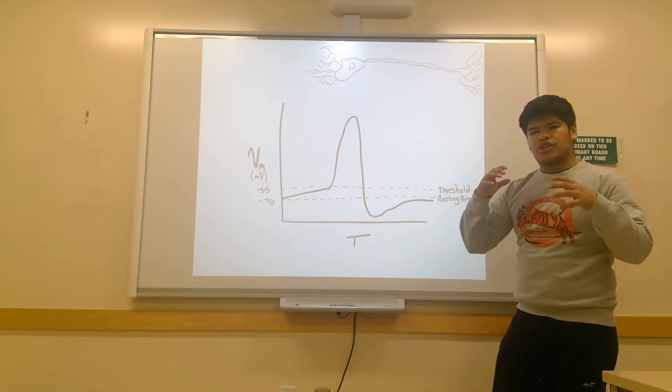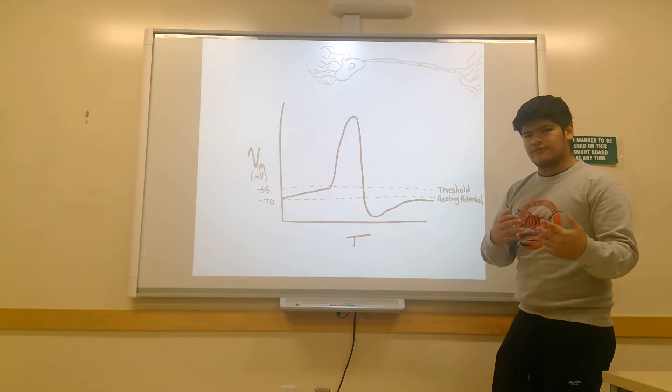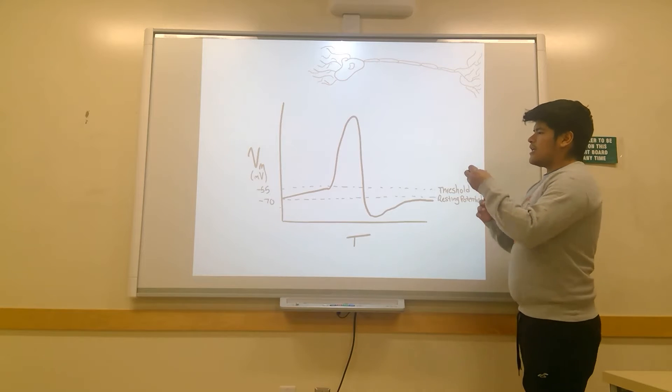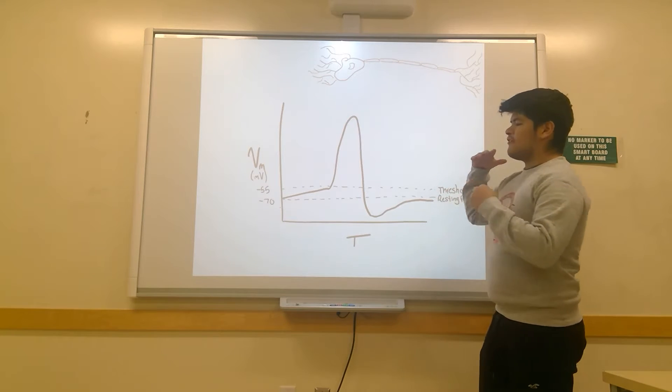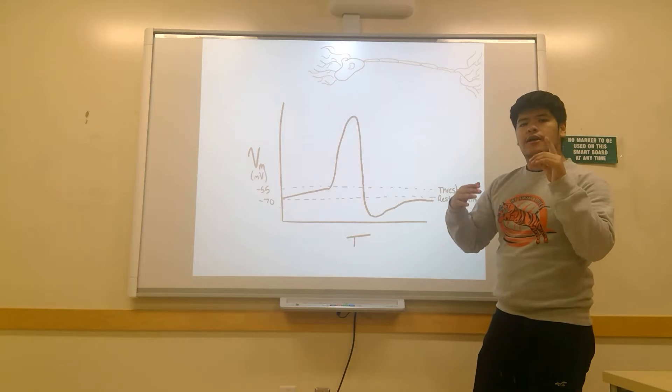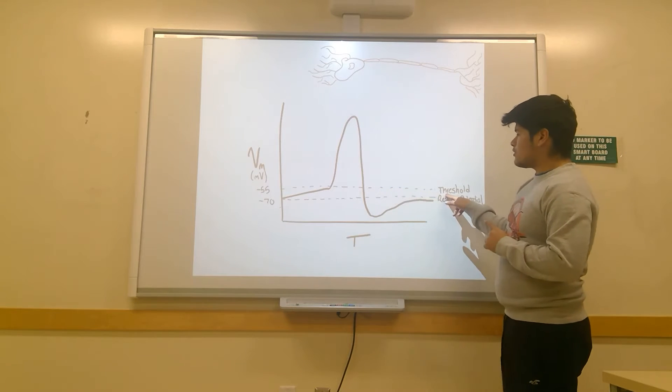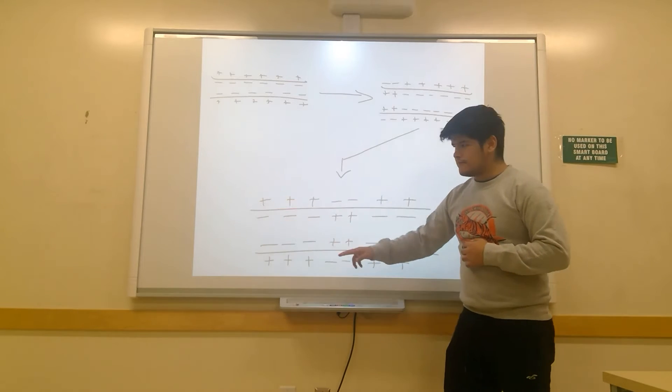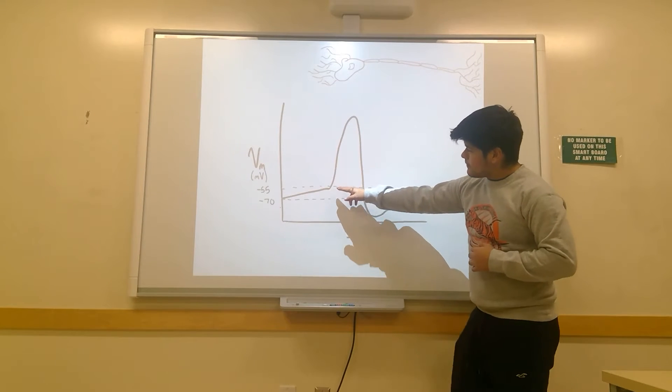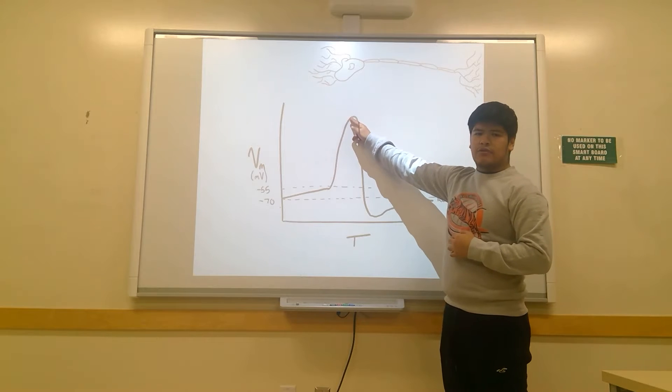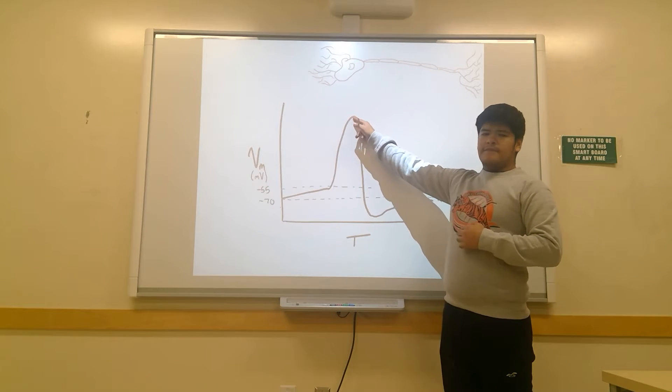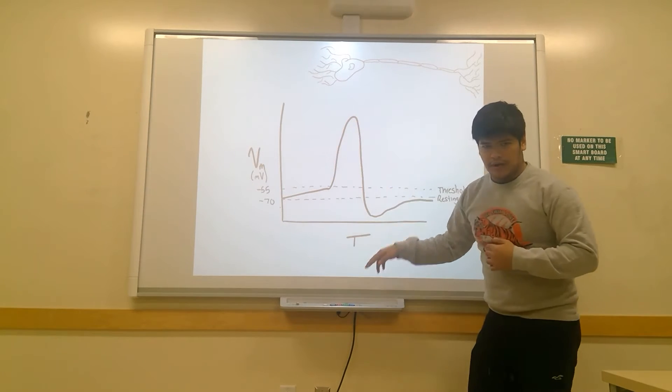When there is an accumulation of stimuli or strong enough stimuli, there will be the firing of an action potential only if it reaches a threshold which is located at negative 55 millivolts. At that point, there will be a massive depolarization of that neuron.